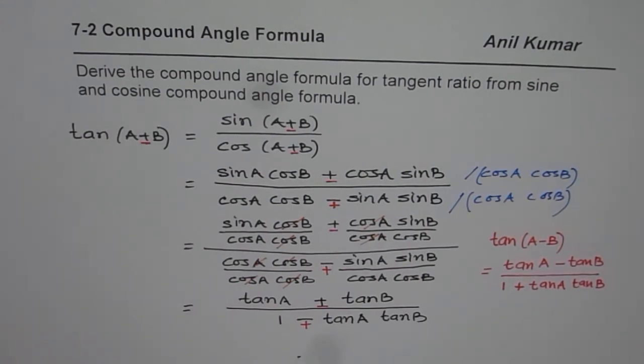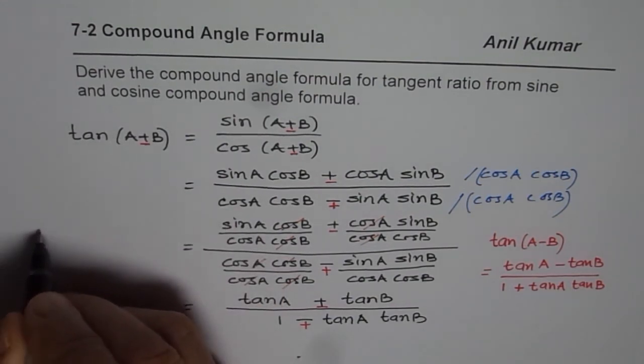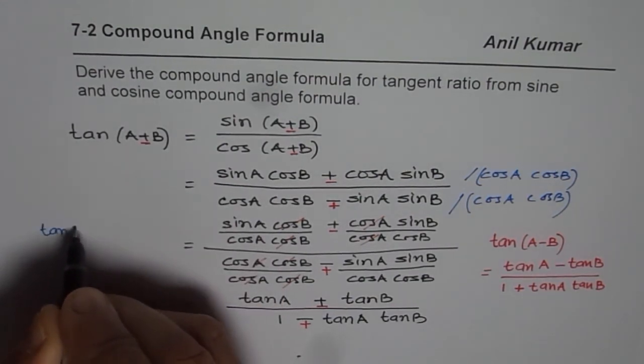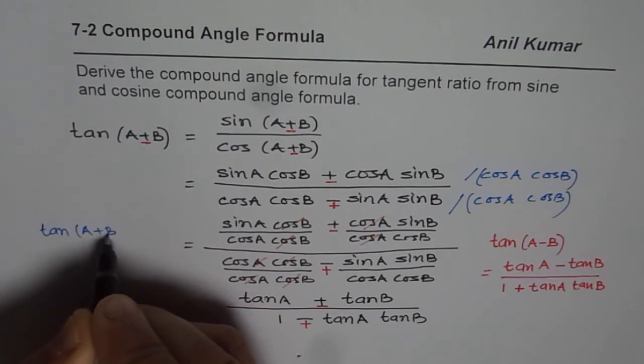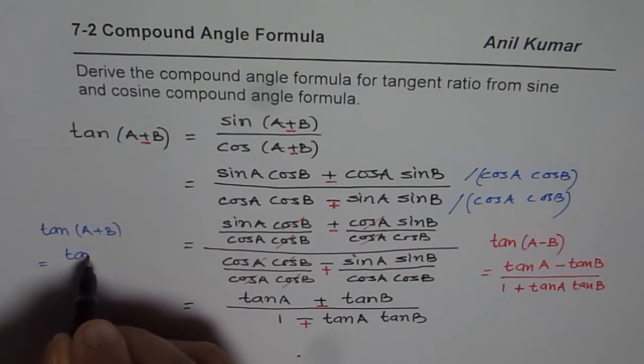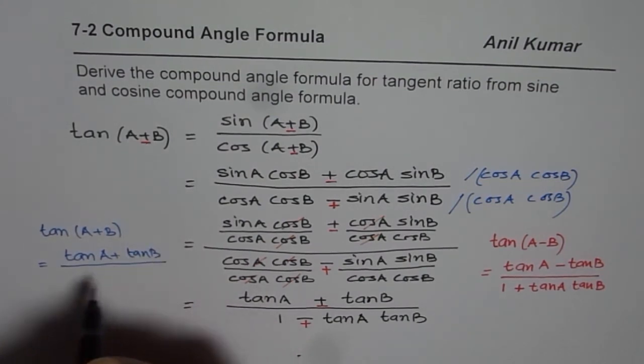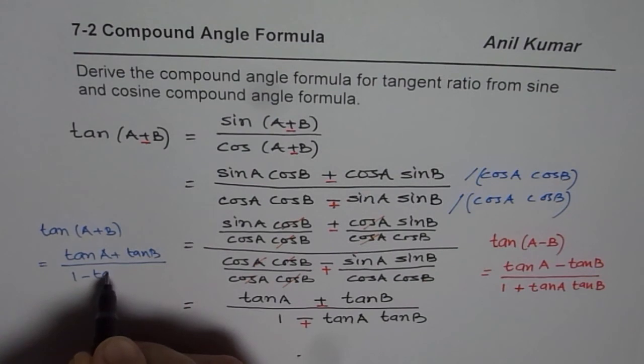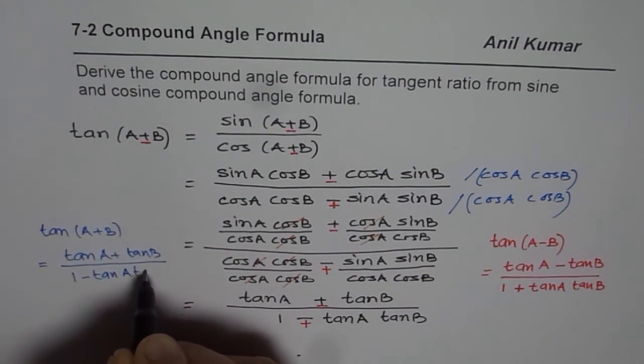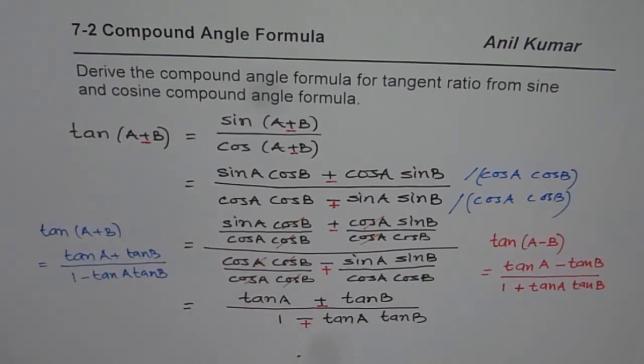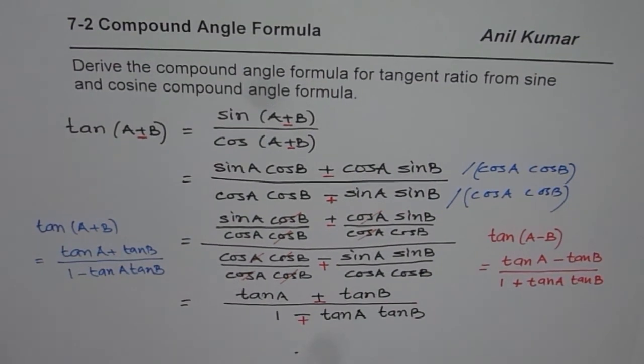Let me rewrite the first one also, in a different ink on the left side. So, tan A plus B equals tan A plus tan B, divided by 1 minus tan A tan B. So, that is how you can actually derive the formula for compound angle for tangent ratio, using sine and cosine ratio. I hope that helps. Thank you, and all the best.